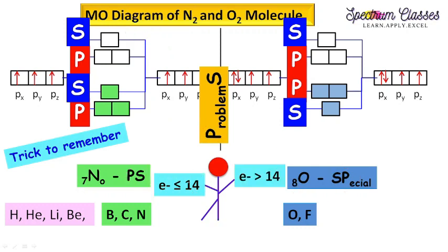And here I have also explicitly written that electrons are less than equal to 14. Electrons are more than 14. Oxygen is very special to cope up with the bigger problems. And bigger stands for more, more number of electrons.